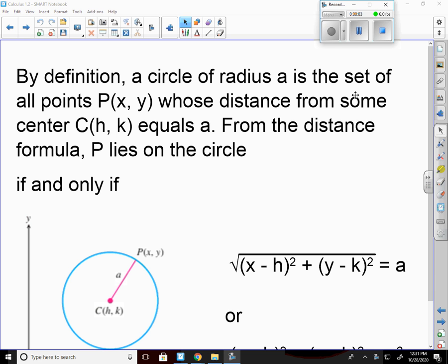Let's pick up where we left off yesterday. By definition, a circle of radius A is the set of all points P, which is just an X and a Y, whose distance from some center C, which are one point H K, equals A.